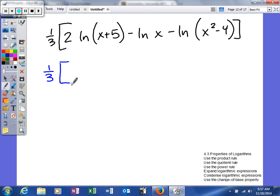I'm going to take all of the coefficients and write them as exponents. We only have one coefficient, so we'll say natural log of x plus five raised to the second power minus the natural log of x minus the natural log of x squared minus four. Now we're going to condense our logarithms. Inside our parenthesis, we have three logarithms, and we just want one.